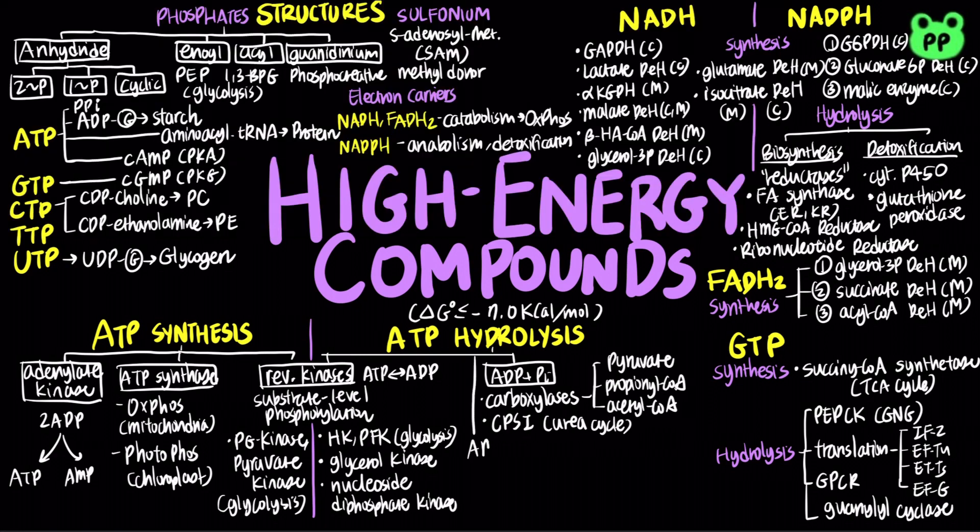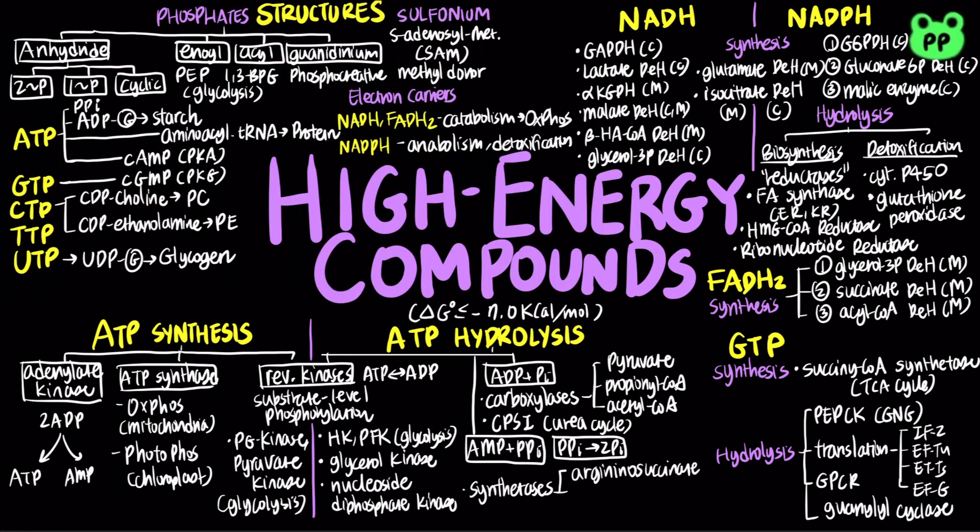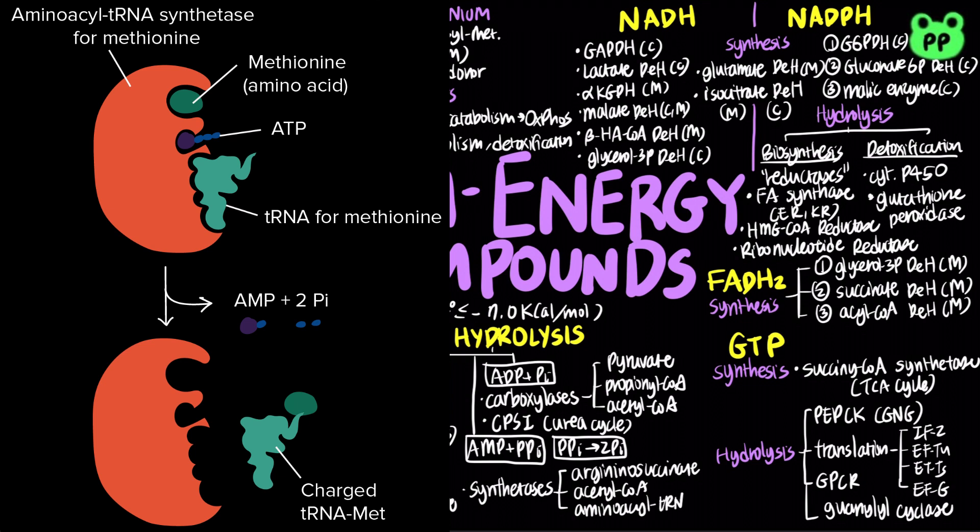ATP can also be hydrolyzed to AMP and inorganic pyrophosphate, which are further hydrolyzed by inorganic pyrophosphatase. Enzymes that hydrolyze ATP this way include argininosuccinate synthetase, which is also part of the urea cycle. Acetyl-CoA synthetase, which is involved in metabolism of acetate. Aminoacyl-tRNA synthetase, which is involved in translation. And lastly, phosphoribosyl pyrophosphate synthetase, or PRPP synthetase, that is involved in the synthesis of nucleotides.